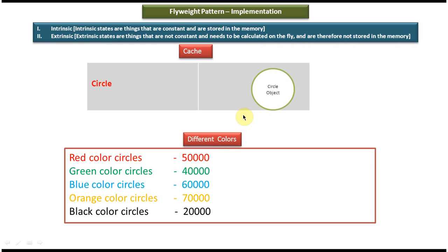In this example, the color is not constant — one time it is red color, one time it is green color, one time it is blue color, like that. So in this example the Extrinsic state is color. This is the scenario of flyweight design pattern.